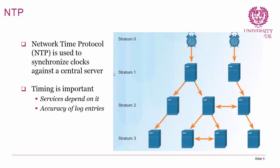Something more important is NTP, or Network Time Protocol. NTP is used to synchronize clocks against a central server, and timing is actually important in networks. For example, Windows Active Directory uses Kerberos for authentication, and Kerberos requires clocks in the domain to be in sync. Accurate timing is also important for the accuracy of log entries — when troubleshooting, you need to know when log entries occurred.